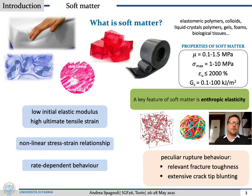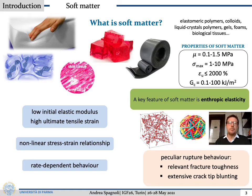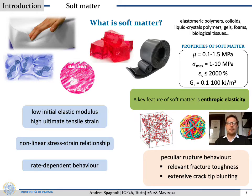We are going to talk about soft matter. So what is soft matter? There are a large class of materials like elastomeric polymers, colloids, liquid crystal polymers, gels, foams, biological tissues, which share some common mechanical features. They have low initial elastic modulus, high ultimate tensile strain, and they can exhibit non-linear stress-strain relationship and rate-dependent behavior.